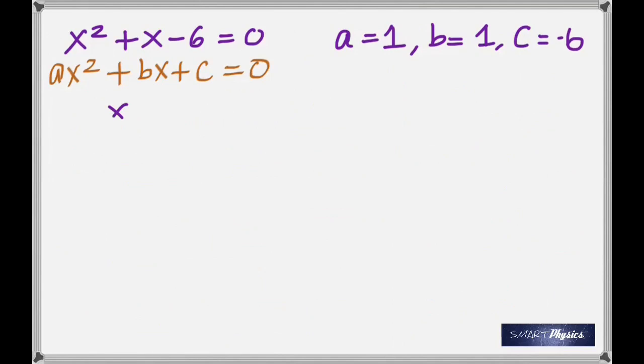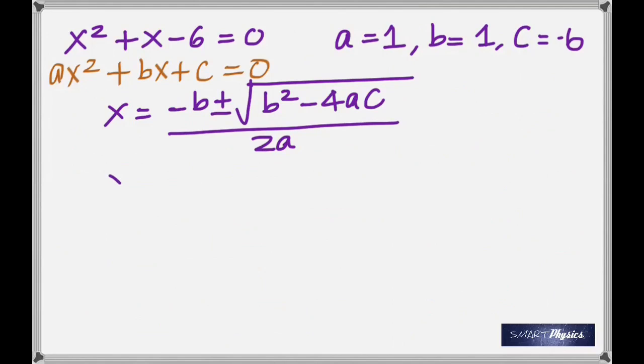And the solution is given by x = (-b ± √(b² - 4ac)) / 2a. You've got to remember that.